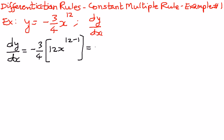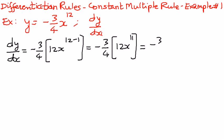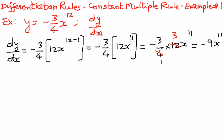When we simplify this, it is going to be negative 3 over 4 times 12x to the power of 11, since 12 minus 1 is 11. So simplifying further: 4 is in the denominator and 12 is in the numerator, so 4 goes into 12 three times, giving us negative 3 times 3, which is 9x to the power of 11. That is our answer; this is where we want to leave it.